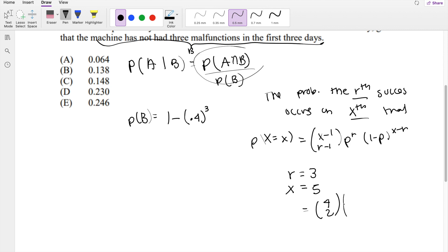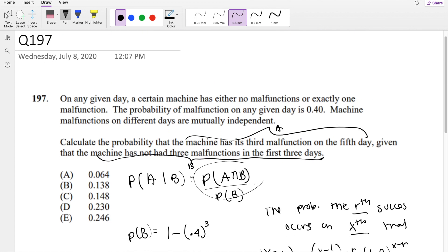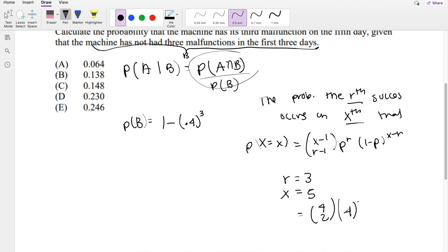Probability malfunction is 0.4 raised to the rth power. And 1 minus p, that's 0.6 raised to x minus r. So 5 minus 3, that's just 2. So that's 6 times 0.4 to the cubed times 0.6 to the second power.